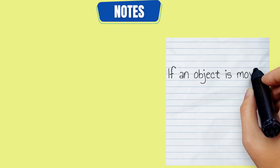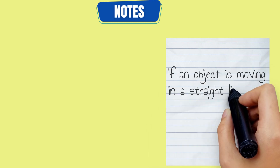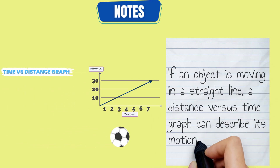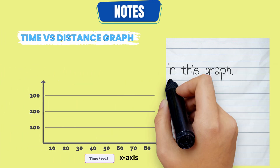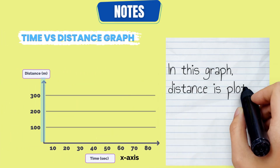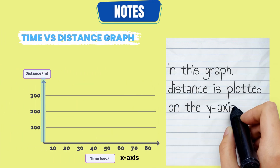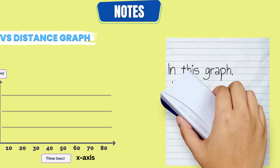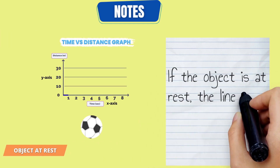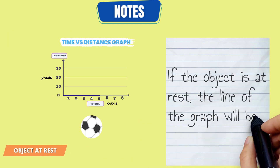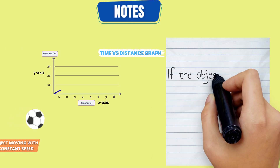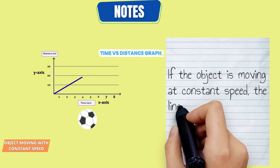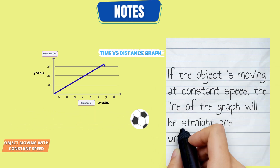If an object is moving in a straight line, a distance versus time graph can describe its motion. In this graph, distance is plotted on the y-axis while time is plotted on the x-axis. If the object is at rest, the line of the graph will be flat. If the object is moving at a constant speed, the line of the graph will be straight and uniform.